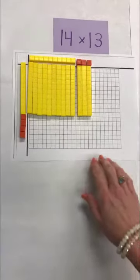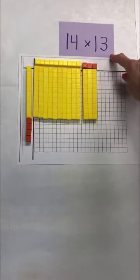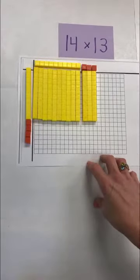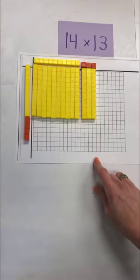So we're going to begin with a two digit by a two digit number. Our problem is 14 times 13 and we're going to begin with the concrete so we always begin with our base ten blocks when we're teaching multiplication.